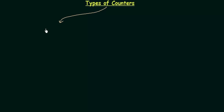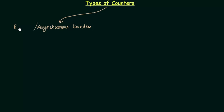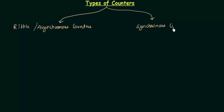The first type is the asynchronous counters. We also call asynchronous counters as ripple counters, so sometimes you will see asynchronous counters written as ripple counters. The second type is the synchronous counters.